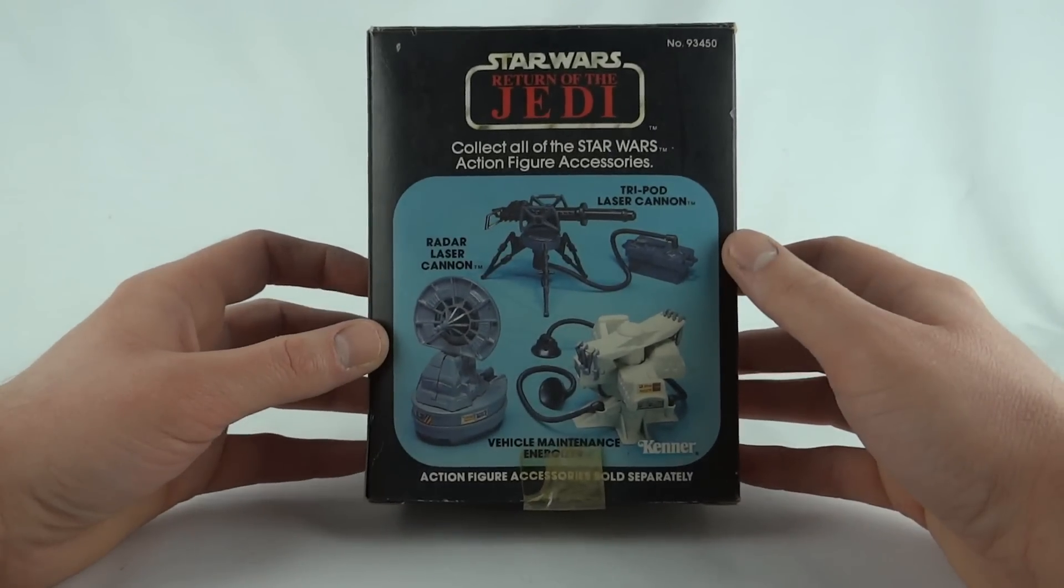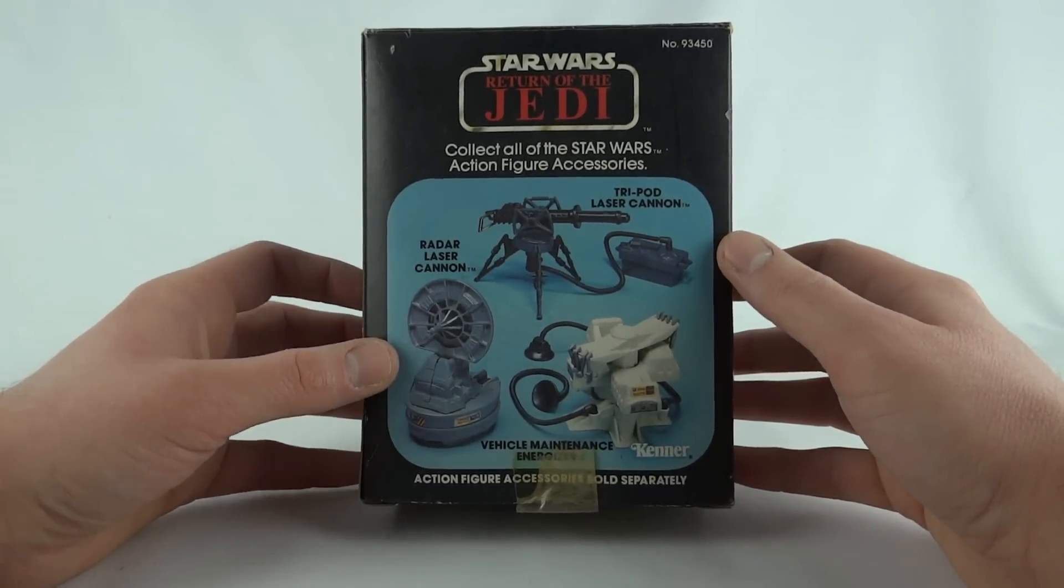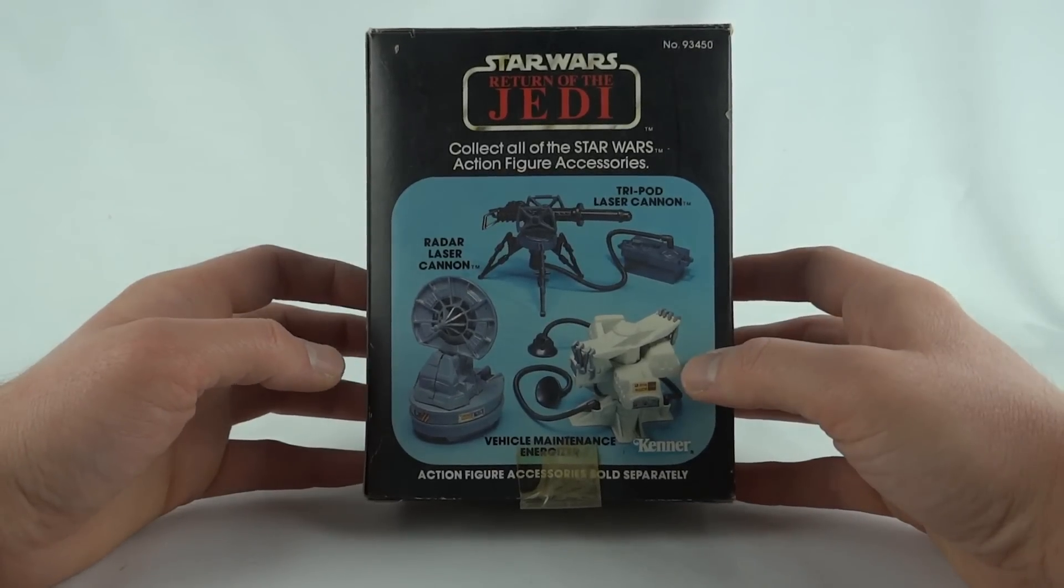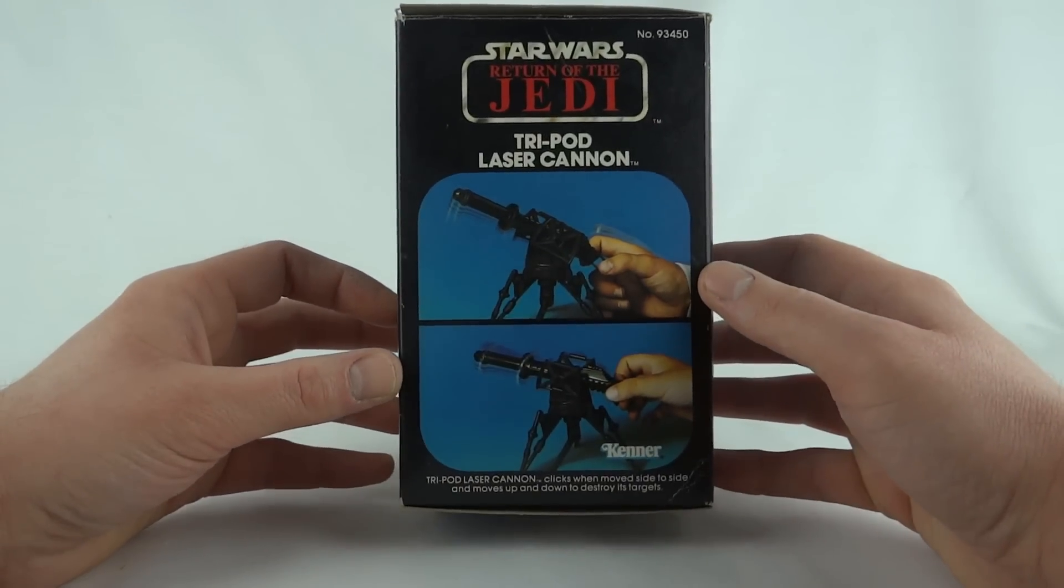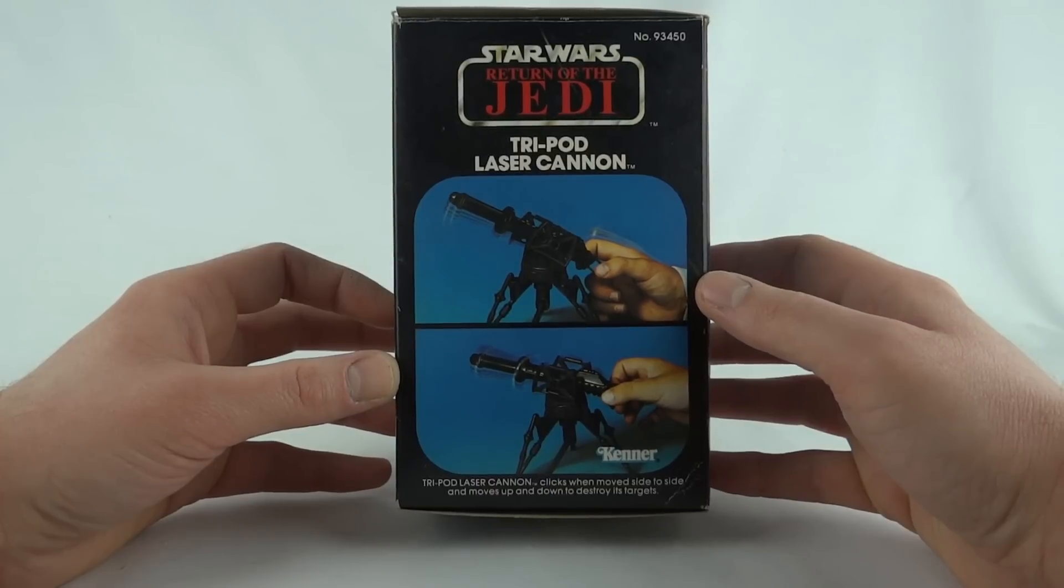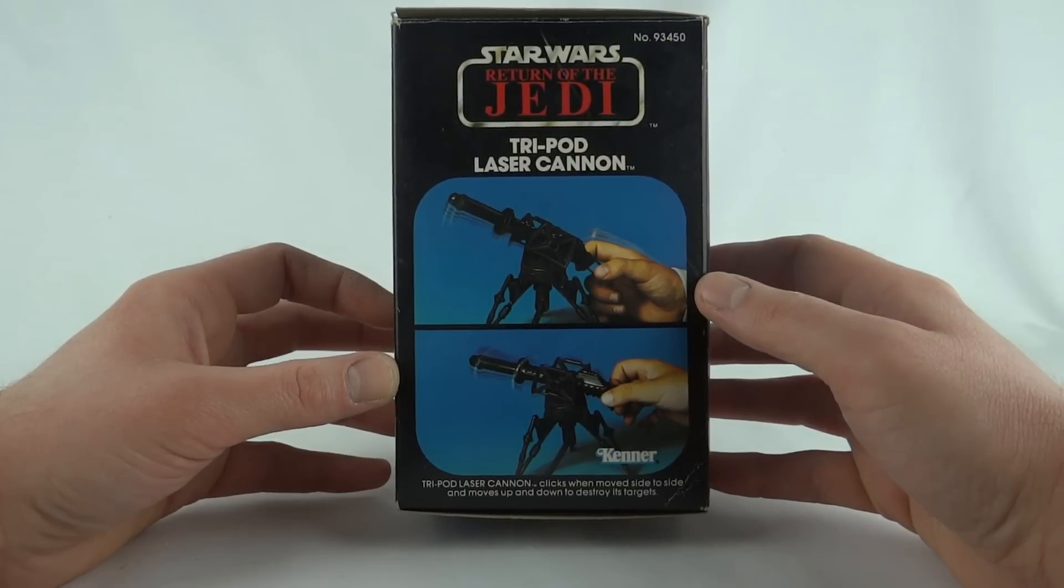On the back you can see the other mini accessories, the Radar Laser Cannon and the Vehicle Maintenance Energizer. On this side, tripod laser cannon clicks when moved side to side and moves up and down to destroy its targets.